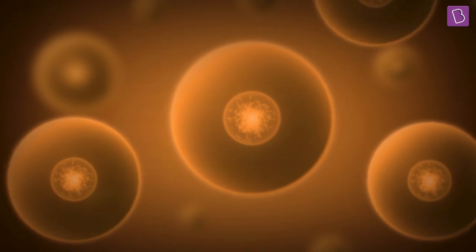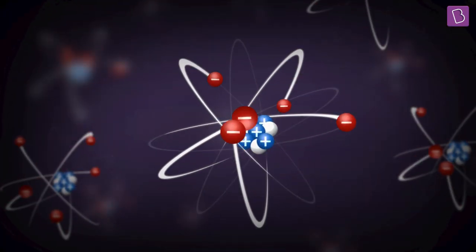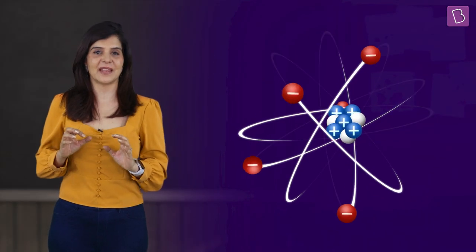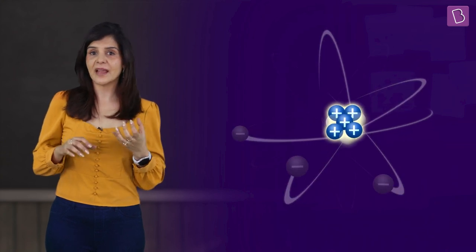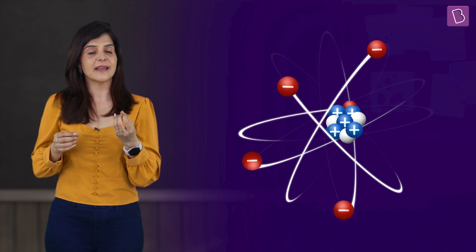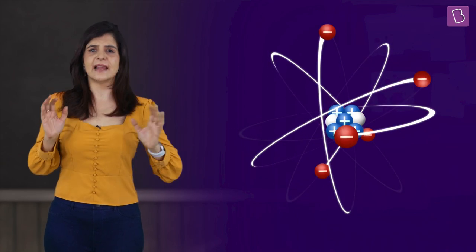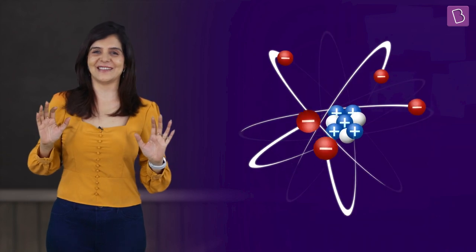Zooming into our bumblebee, we can see that just like everything in the world, it is made up of tiny atoms — trillions and trillions of them. An atom is further made up of a nucleus and electrons around it. The nucleus carries a positive electric charge while electrons carry a negative electric charge. These electric charges are responsible for all the electricity in the world.